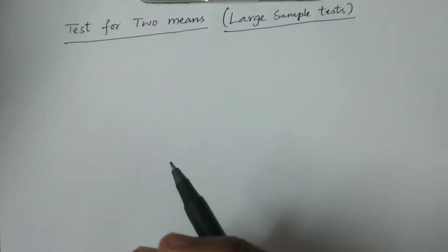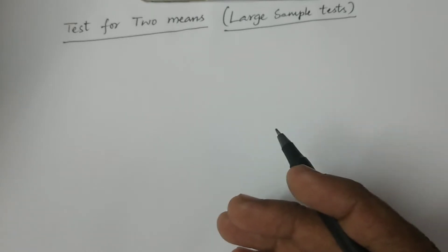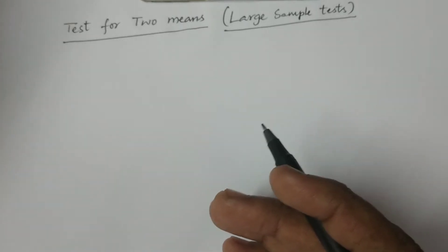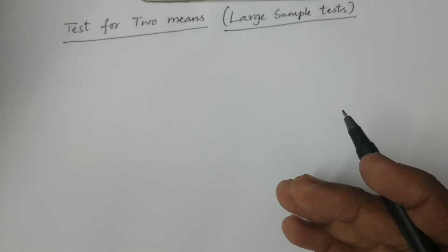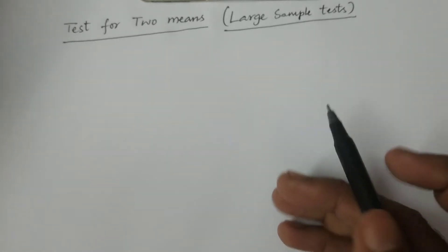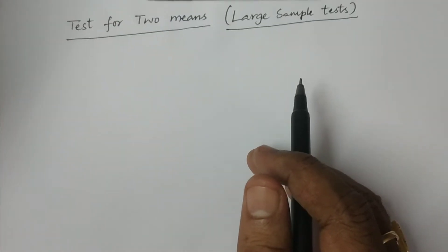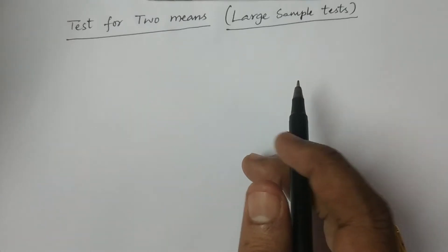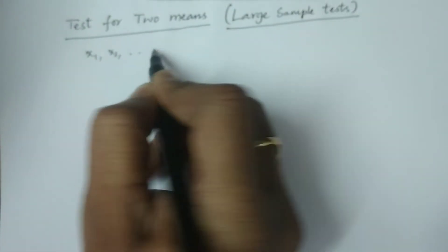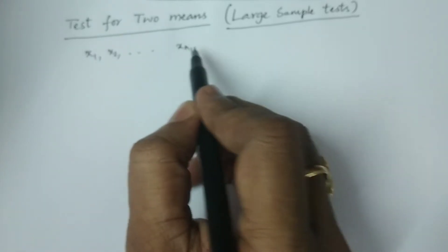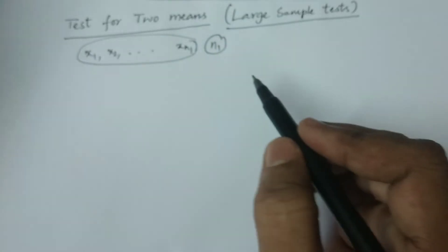If you take two samples from a population or two different populations, both are in the same sense which is going to be compared. For the purpose of comparison, we consider two samples. Consider x1, x2, and so on up to xn1 — a sample of size n1 drawn from a particular population.